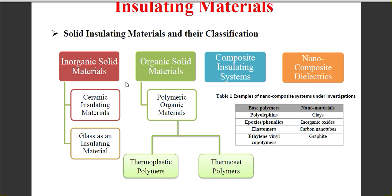In the types of solid insulating material, we mainly have organic and inorganic. In inorganic solid materials, we have ceramic insulators — which is essentially porcelain material — and glass insulators. These two types of insulating materials are mainly seen in electrical systems.